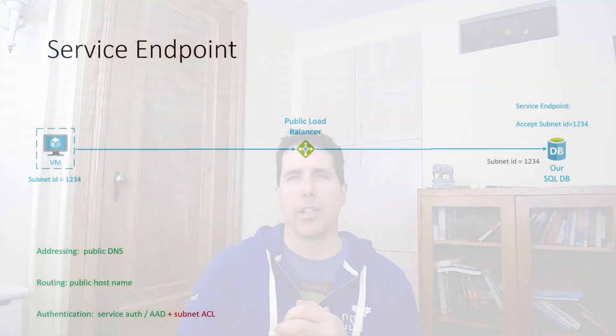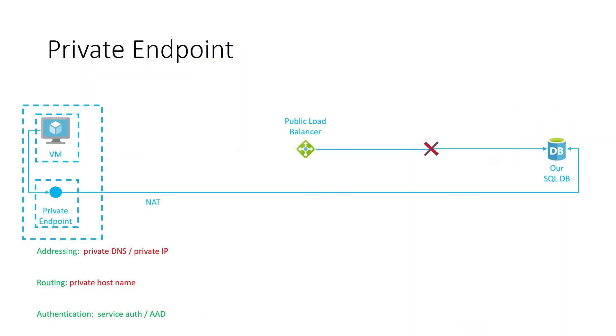We're still using the public IP and a public hostname. But in order to access the service, you need to come from a virtual network in Azure. Private endpoint is quite different — it will materialize an endpoint inside your own subnet by NATing it, performing network address translation. You no longer talk to the public IP; you talk to a private IP.